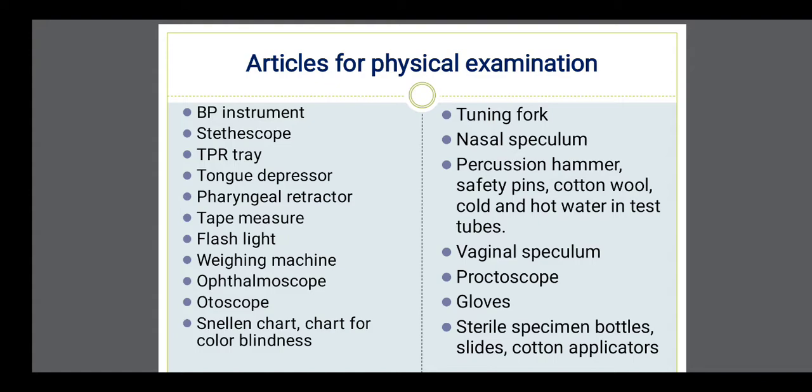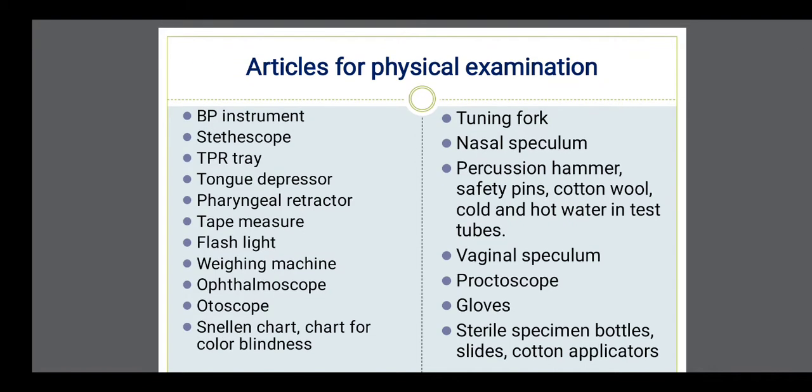Then the tape measure. This is used to measure the skull circumference, abdominal circumference, and mid-arm circumference. Then a flashlight or torch is also required. Weighing machine to take the weight of the patient. Ophthalmoscope and otoscope are also required.